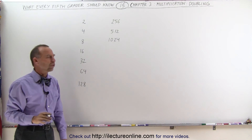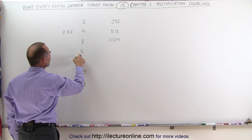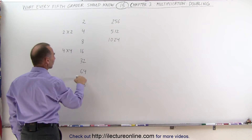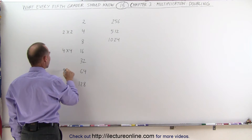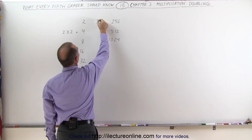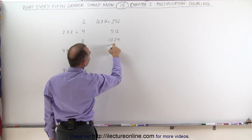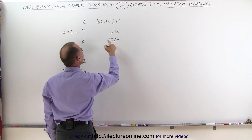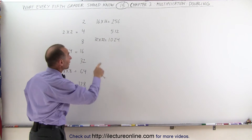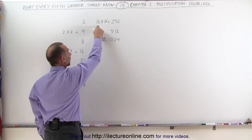Now let's explore those numbers just a little bit more. 4 is really 2 times 2. And 16 is 4 times 4. Let's go to 64 — 64 is 8 times 8. And 256 is 16 times 16. And 1024 — is it 32 times 32? Well, when you multiply the last two numbers together, you get a 4, and that's what this is.